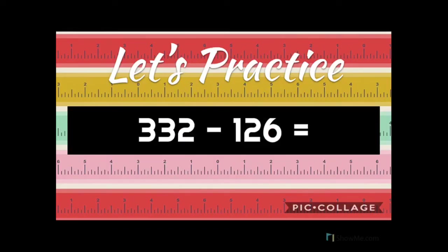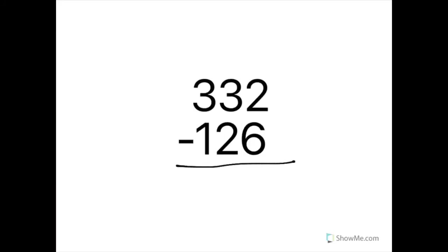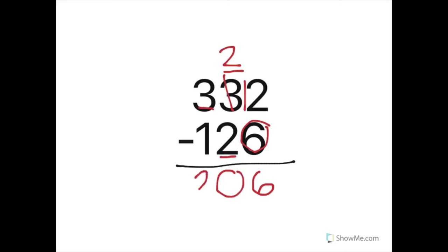Next: 332 minus 126. I've got more on the floor so I need to go next door and get ten more. 12 minus six is also a reverse doubles fact — 12 minus six is six. Then I notice I have numbers the same, which means zero's the game. Finally, more on top, no need to stop: three minus one is two. So 332 minus 126 equals 206.